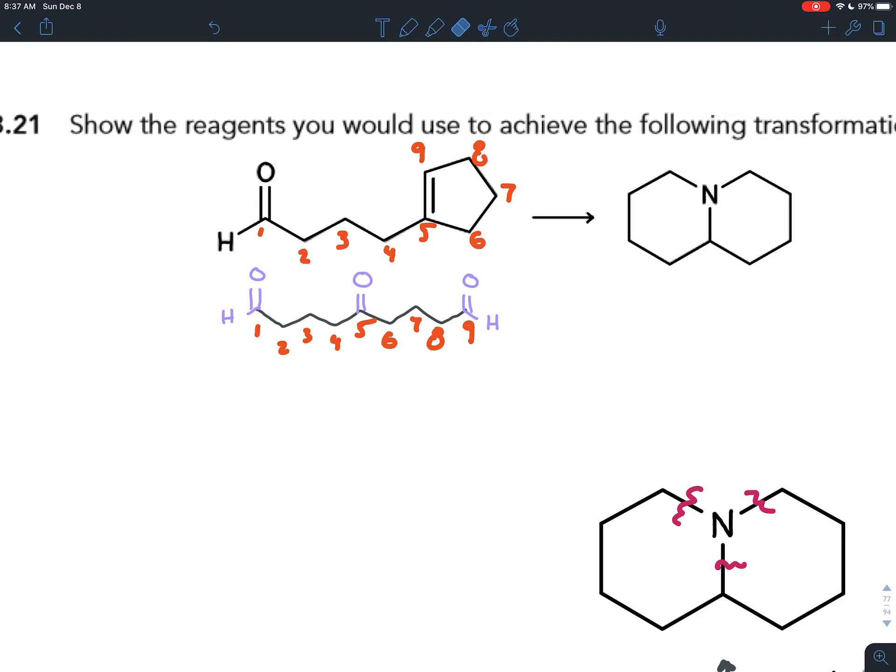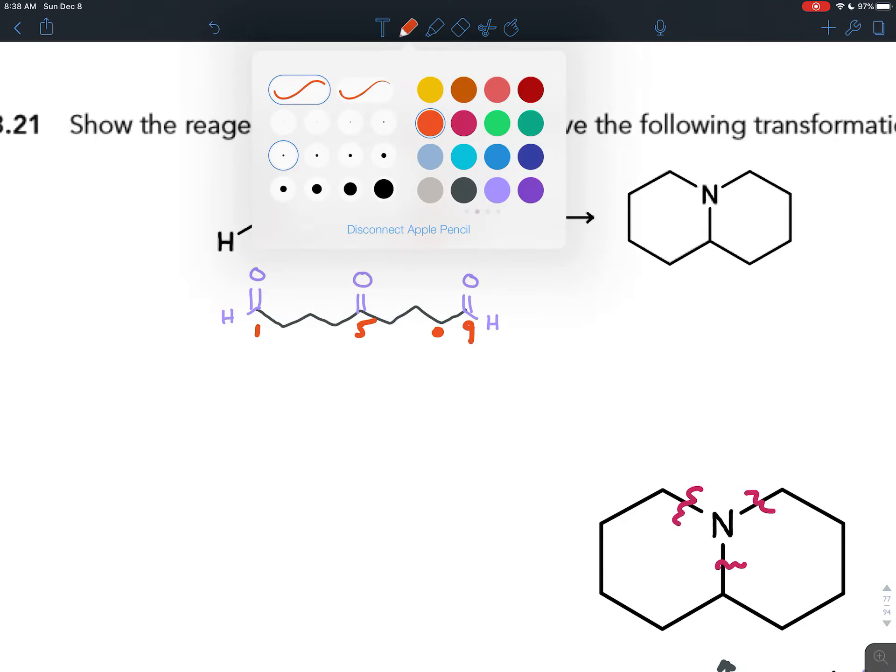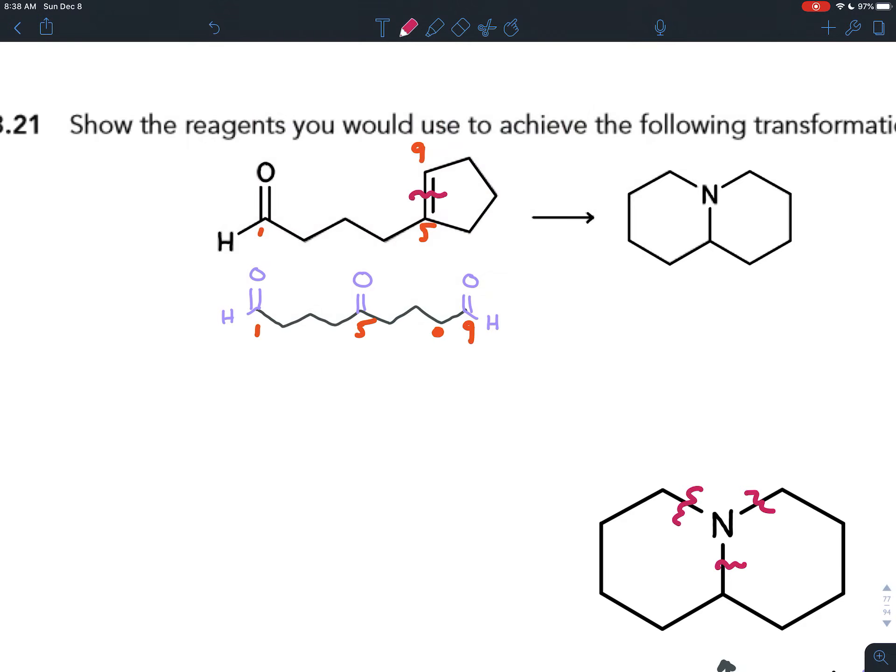Now what you'll notice is on the carbons where we have the carbonyls, one, five, and nine, those are the carbons that are in the double bond here. In other words, if only we could break this double bond and turn the double bond into carbonyls, then we can get this compound that we need. And we can do that.